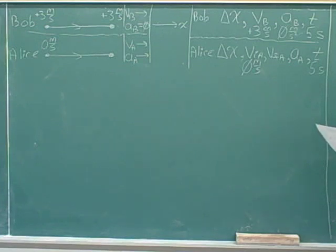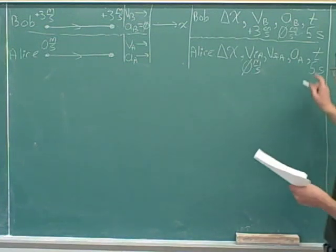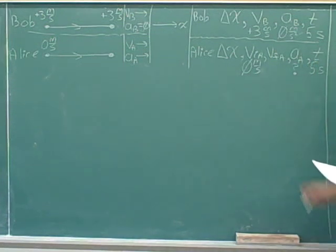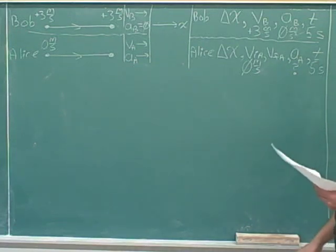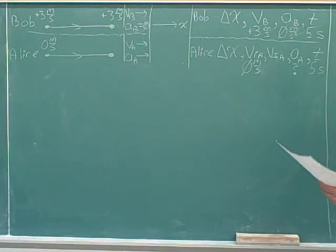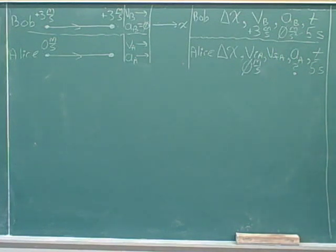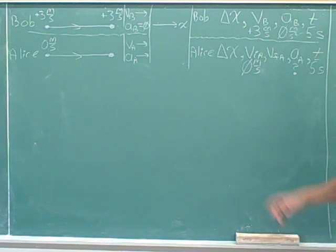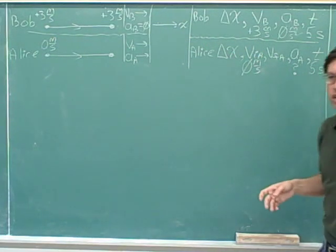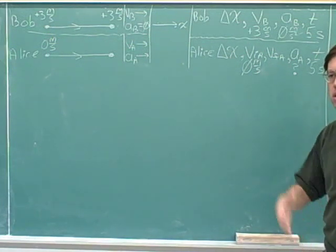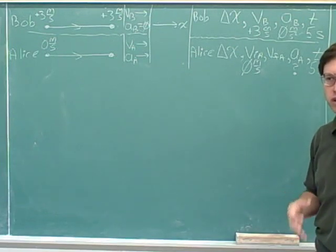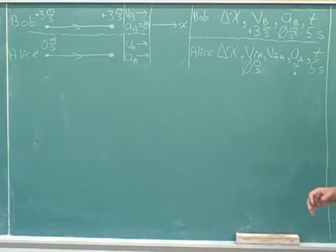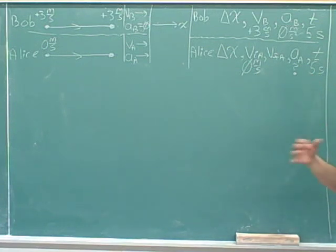The question is asking us for Alice's acceleration. Now, to pick a kinematics equation for Alice, we need to know three of the kinematics variables. But we're not ready for that yet because we only know two variables: Alice's initial velocity and Alice's time. We need one more number before we can pick an equation for Alice.